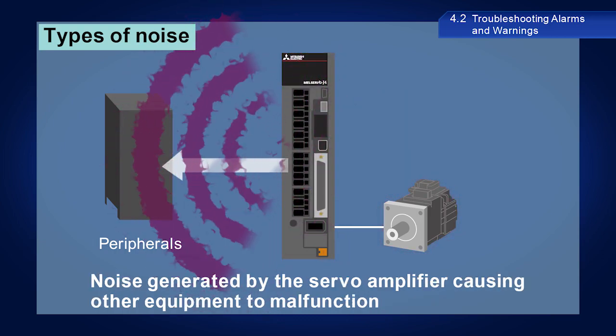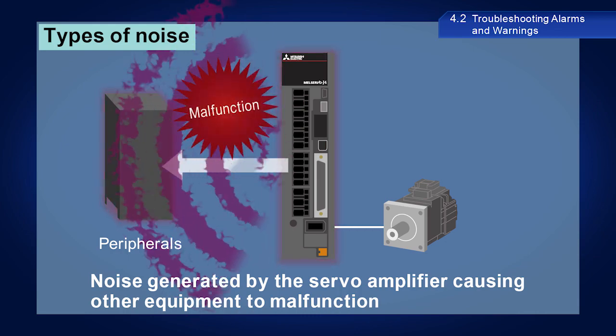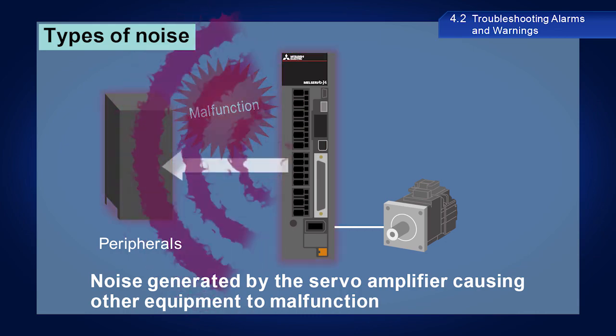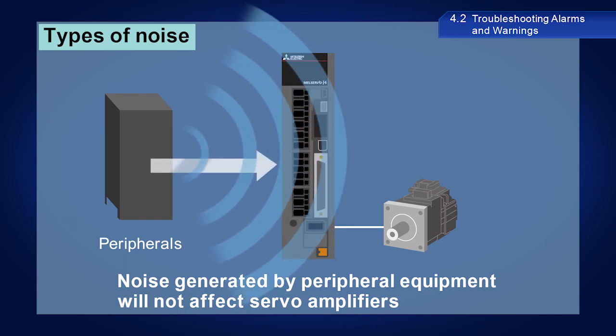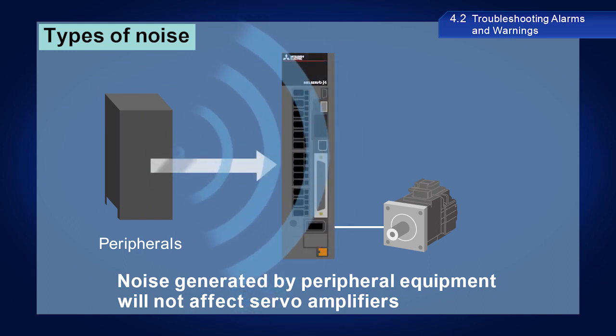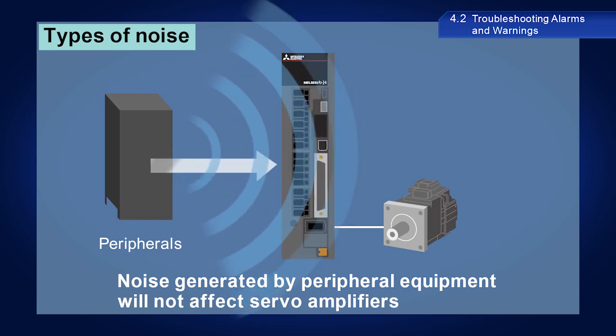Noise generated by the servo amplifier can also cause other equipment to operate incorrectly. Additionally, some noise generated by peripheral equipment will not affect servo amplifiers. When alarm 20.1 occurs, you must find and resolve the cause of the noise. The most common noise problem is due to the bundling of servo amplifier input and output wires with signal wires.